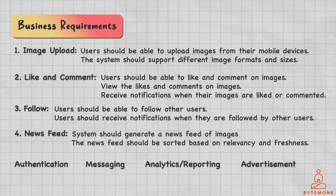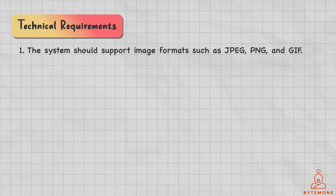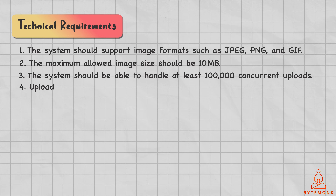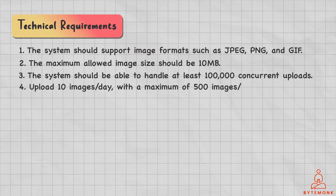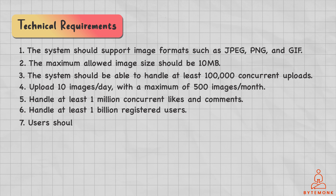Speaking of technical requirements, the system should be able to support image formats including JPEG, PNG, or GIF. The maximum allowed image size should be 10 MB. The system should be able to handle at least 100,000 concurrent uploads, and users should be able to upload 10 images per day with a maximum of 500 images per month. The system should also be able to handle 1 million concurrent likes and comments, and should be able to handle at least 1 billion registered users. Users should be able to follow at least 1,000 other users.